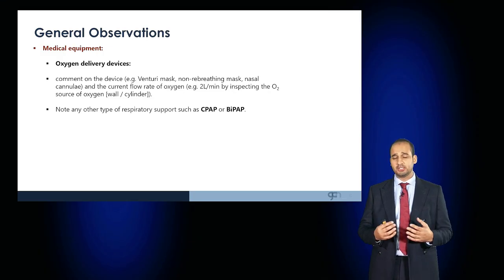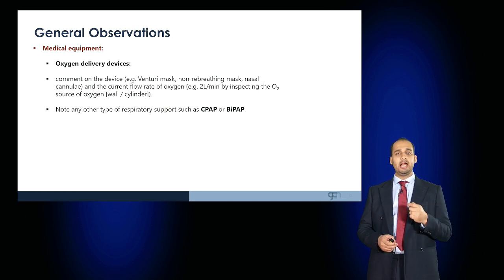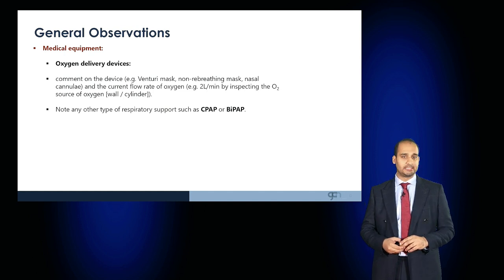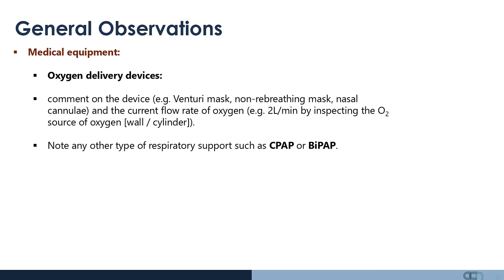Explain to the patient that you're going to make some general observations about the room. Look for any medical equipment, in particular for oxygen delivery devices. Comment on the nature of the device, whether it's a Venturi mask, a non-rebreathing mask, nasal cannulae, and what the current flow of oxygen is being administered per minute. Assess any other types of respiratory support the patient might be receiving, such as continuous positive airway pressure or bi-level positive airway pressure support.